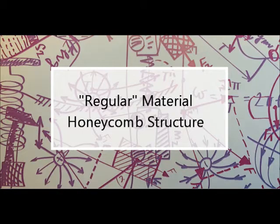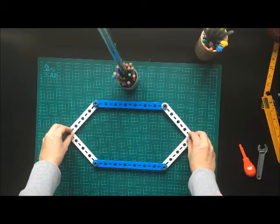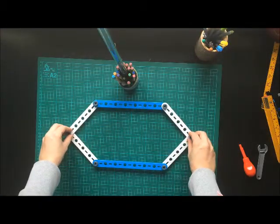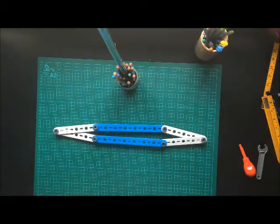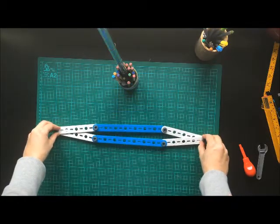So if we start, first of all, with a regular material, which has, say, a honeycomb structure, now when I grab the ends and pull it, you can see the two blue pieces come together. The material's getting thinner, and it has a positive Poisson ratio.